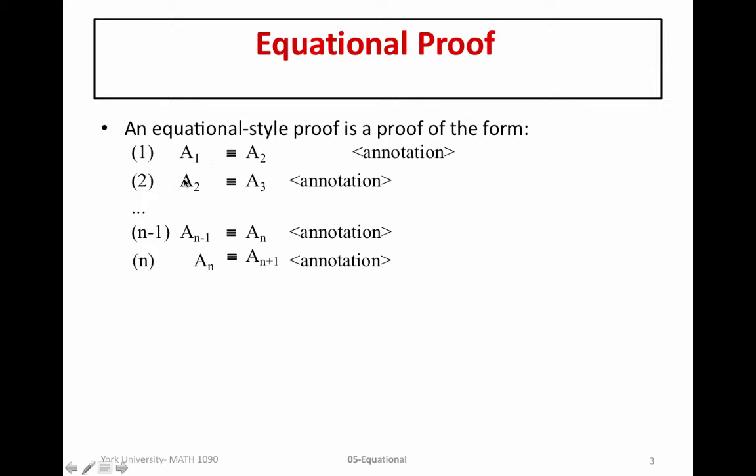What's important here is that we're establishing a series of equivalences. So a1 equivalent to a2, a2 equivalent to a3, a3 equivalent to a4, all the way up to an minus 1 equivalent to an, and an equivalent to an plus 1. So this is the form of an Equational Style Proof. And as you can imagine, we will want to use the transitivity of the equivalence operator to conclude that a1 is equivalent to an plus 1.